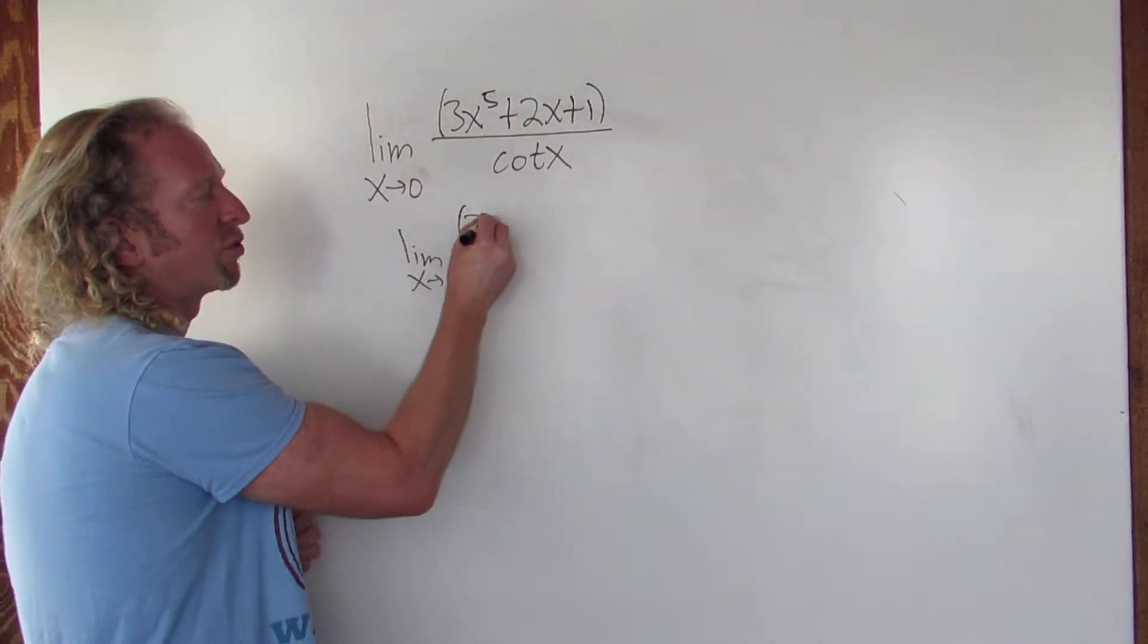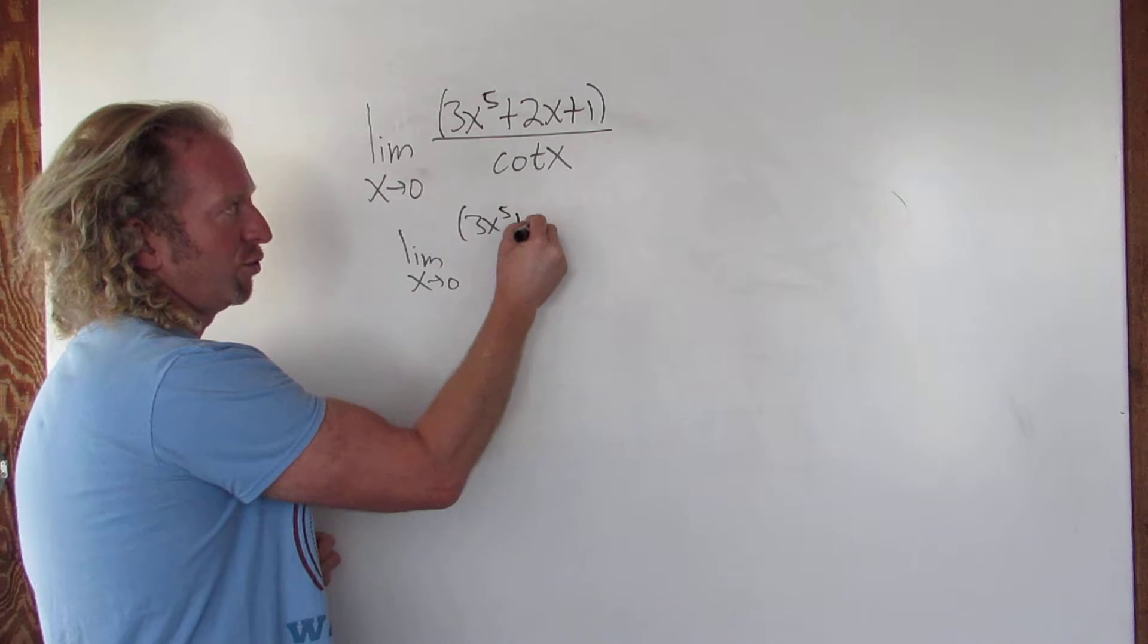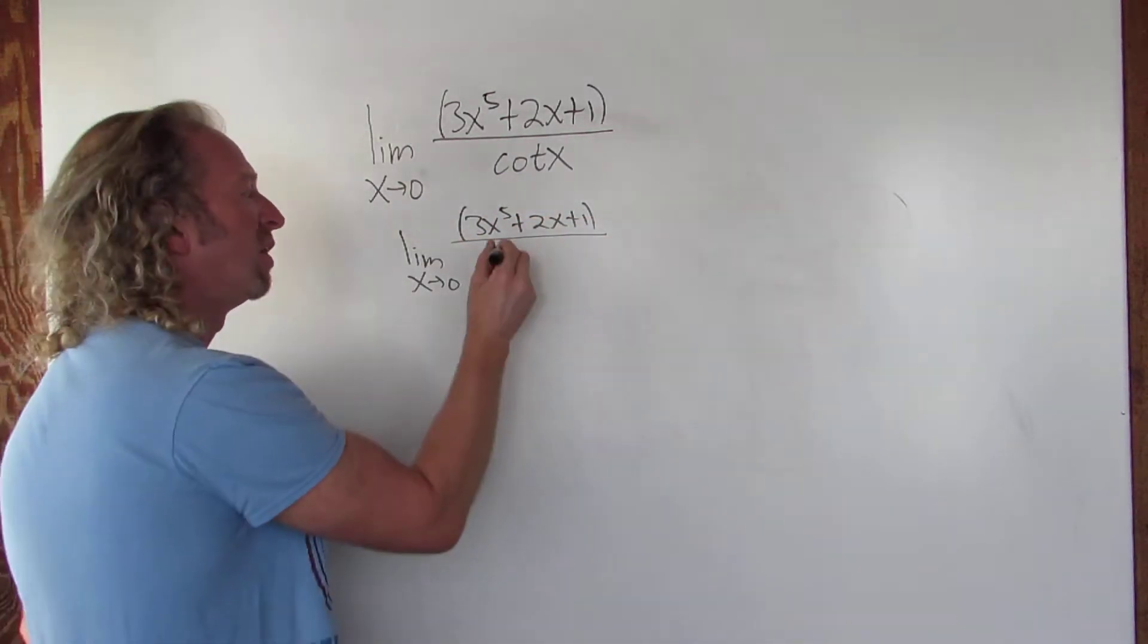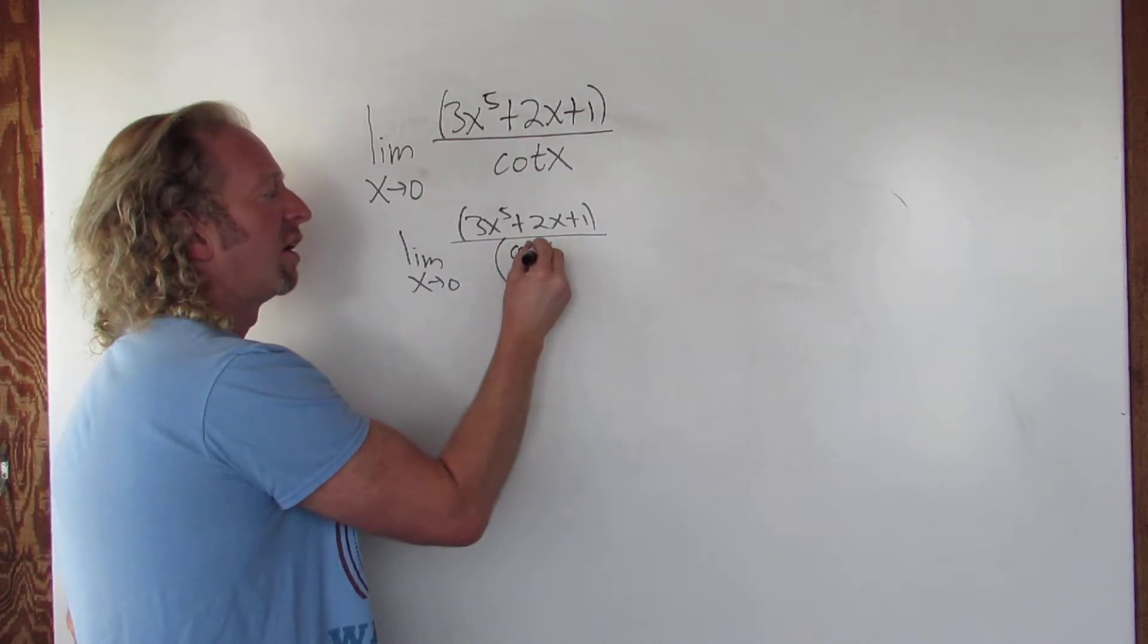So the numerator is the same, so it's 3x to the fifth plus 2x plus 1. But cotangent is cosine over sine, right? So this is cosine of x over sine x.